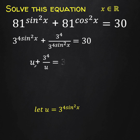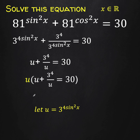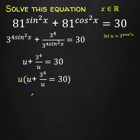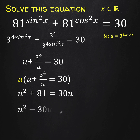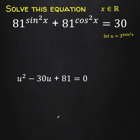This equation can now be written as u plus 3 to the 4th over u equals 30. Let's multiply the equation by u. Distributing u to both sides, we have u squared plus 3 to the 4th, which is 81, equals 30u. This is a quadratic equation, so let's write it in standard form by subtracting 30u from both sides.